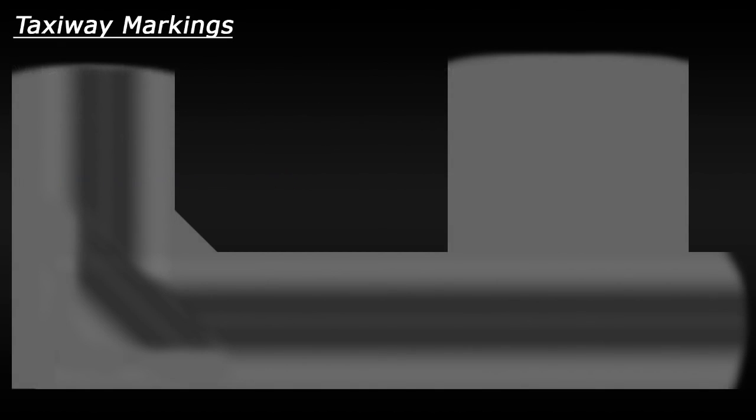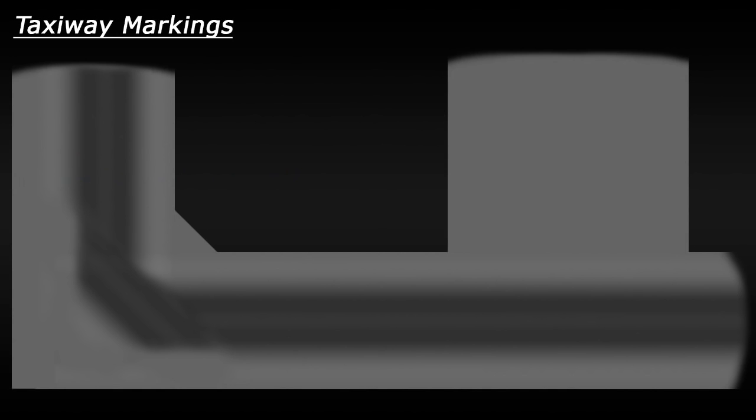So let's start with some basic taxiway markings. You'll notice that all of the markings will usually be painted yellow. First, you have the taxiway center line, which is a single solid yellow line which simply marks the center of the taxiway.